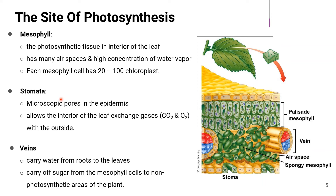The leaves also have stomata — these are microscopic pores in the epidermis which allow the interior of the leaf to exchange gases, carbon dioxide and oxygen, with the outside. Veins carry water from the roots to the leaf and carry sugar from the mesophyll cells to the non-photosynthetic areas of the plant, such as roots.